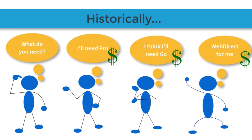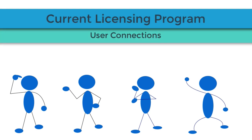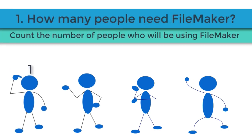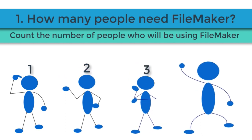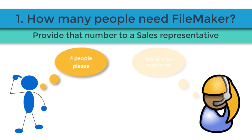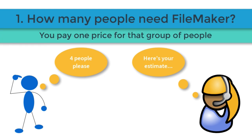Over the last several years, FileMaker has listened to its customers and simplified the whole purchasing process. In plain English, if you want FileMaker for your organization now, you simply add up the number of people who will be using FileMaker and provide that number to your FileMaker sales rep, and they will provide you a quote. All you need to know is the number of people who need to connect, and you pay the amount for that group. It's a radically simplified process.